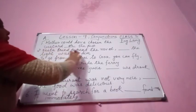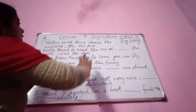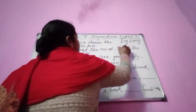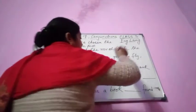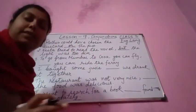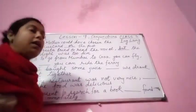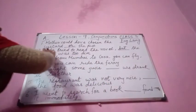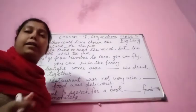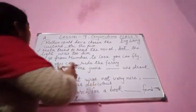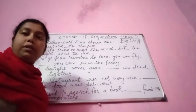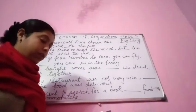Number two: Nita tried to read the novel — but — the light was too dim. Here two opposite ideas are joined. Nita tried to read the novel, but why could she not? Because the light was too dim. So we use 'but.'